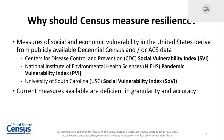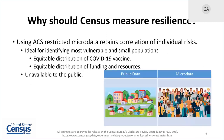What we at the Census Bureau know about these existing measures of resilience and vulnerability is that they all derive from publicly available decennial census or ACS data. Because they derive from publicly available data, the measures are either deficient in granularity or accuracy. Here at the Census Bureau, we are stewards of restricted microdata. If you've ever filled out a Census Bureau survey, it is housed at the Bureau and not released to anybody else. It's under lock and key to protect people's privacy.